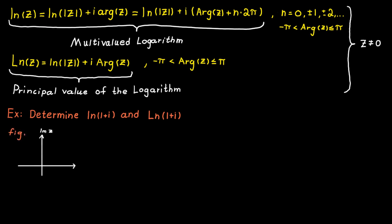To solve this problem we need to know two things. We need to know the absolute value of a complex number, and we need to know its principal argument. And we can determine these two from this figure.